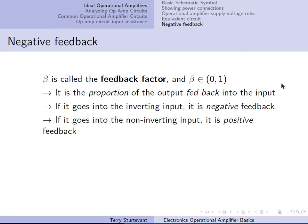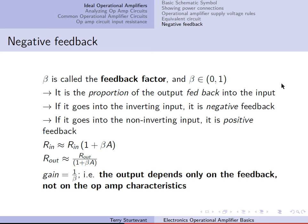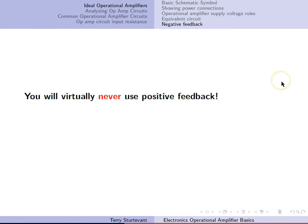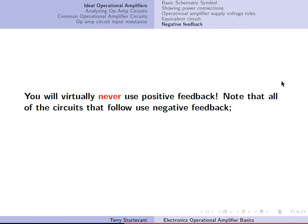If the feedback goes into the non-inverting input, it's called positive feedback. The input resistance with feedback is the input resistance times 1 plus beta times A, where A is the voltage gain. The output resistance with feedback is the original output resistance divided by 1 plus beta times A. So the gain is 1 over beta — in other words, the output depends only on the feedback, not on the op-amp characteristics. You will virtually never use positive feedback in an op-amp circuit. Note that all the circuits that follow use negative feedback, meaning the feedback goes into the inverting input.